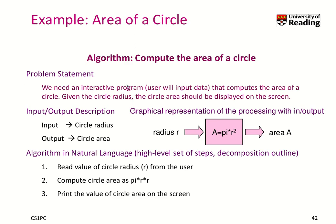Here is another example: computing the area of a circle. The problem statement: we need an interactive program that computes the area of a circle. Given the circle radius, the circle area should be displayed on the screen. We can represent it graphically using our algorithm box — we have the radius r, then we compute the area somehow, and we output the area. There is the mathematical equation for how to compute it. The input is the circle radius and the output is the circle area. In natural language: read the value of circle radius r from the user, compute the circle area as pi times r times r, and print the value of circle area on the screen.